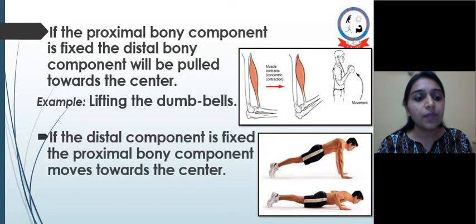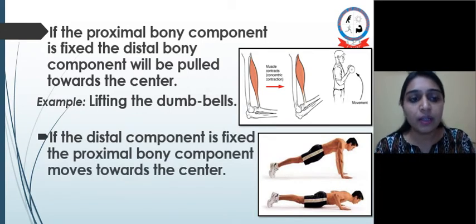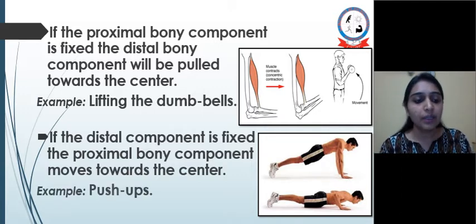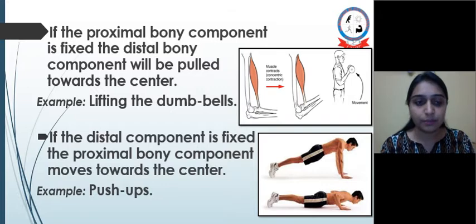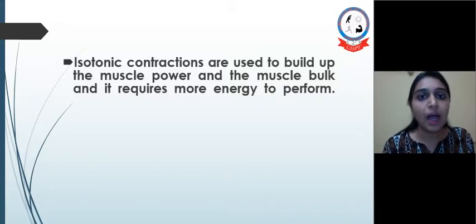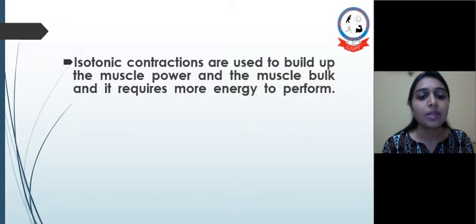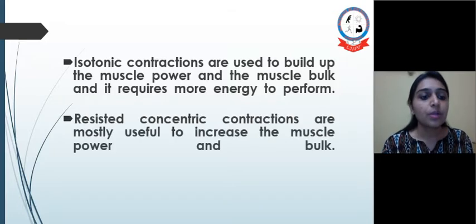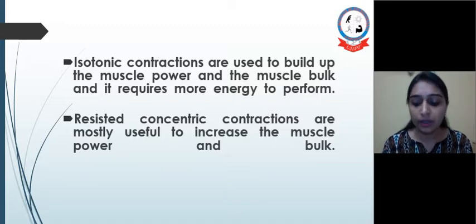Another example is when the distal component is fixed and the proximal bony component moves towards the center, such as in push-ups where the opposite movement occurs. Isotonic contractions are used to build up muscle power and muscle bulk. Resisted concentric contractions are most useful to increase muscle power and bulk.